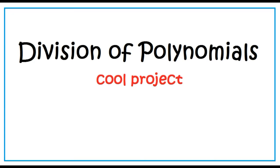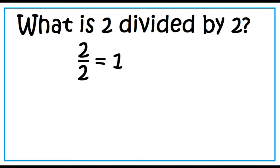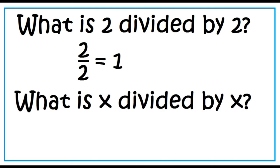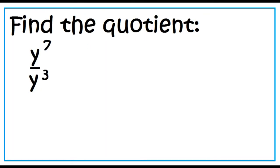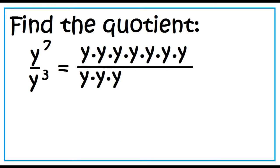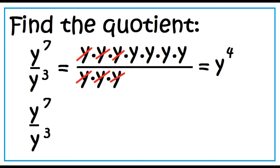Division of Polynomials. What is 2 divided by 2? 2 divided by 2 is 1. What is x divided by x? x divided by x is 1. Divide y to the power of 7 by y to the power of 3. In expanded form, we can readily divide y by itself, so y times y times y times y is equal to y to the power of 4. To divide monomials with the same base, just subtract the exponents: y to the 7 minus 3 is equal to y to the power of 4.